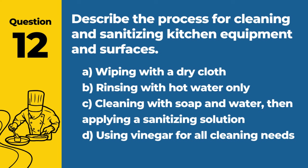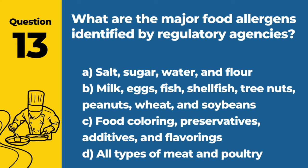Question 13. What are the major food allergens identified by regulatory agencies? Answer: B. Milk, eggs, fish, shellfish, tree nuts, peanuts, wheat, and soybeans. These are recognized as the major food allergens that must be identified on food labels.